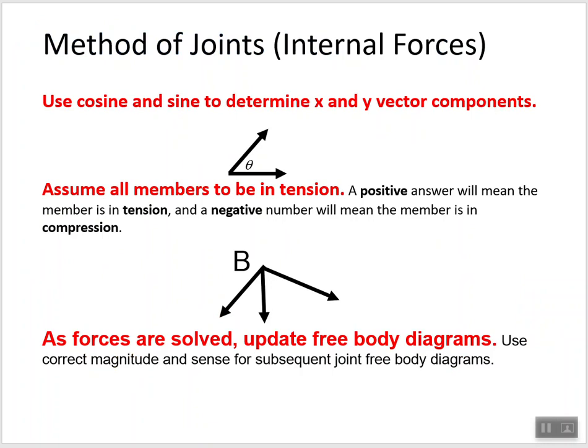Okay, method of joints, internal forces. We're going to use cosine and sine to determine X and Y vector components. We're going to assume all members to be in tension. A positive answer will mean the member is in tension, and a negative number will mean the member is in compression. As forces are solved, update our free body diagrams. Use correct magnitudes and directions for subsequent joint free body diagrams.